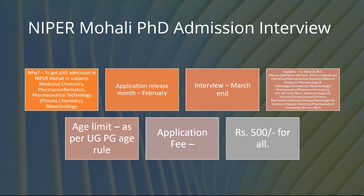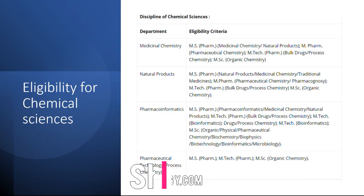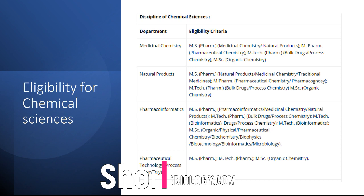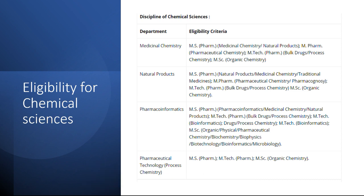There are two data sets to consider: one for chemical sciences and one for life sciences. For chemical sciences, there are four different streams: medicinal chemistry, natural products, pharmacoinformatics, and pharmaceutical technology — also known as process chemistry, covering upstream and downstream processing. For medicinal chemistry, eligibility includes any M.Pharm or MSc; for natural products, MS Pharm, traditional medicines, M.Pharm, or MSc in organic chemistry.